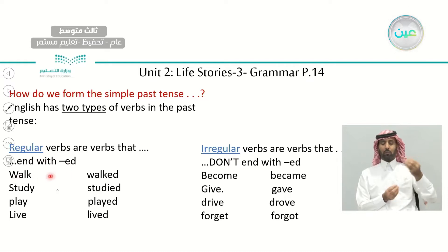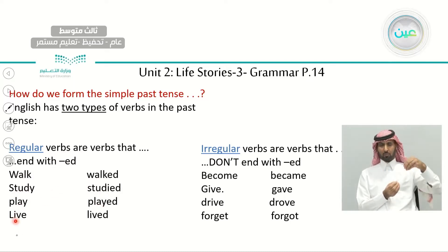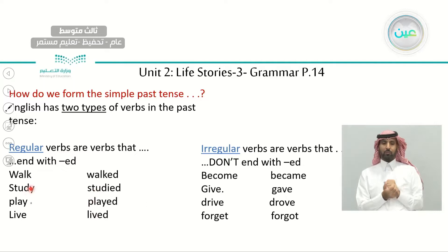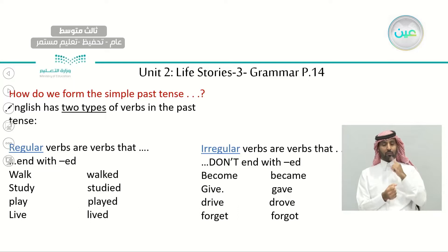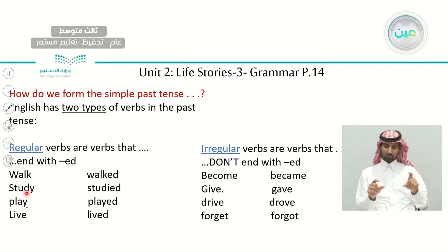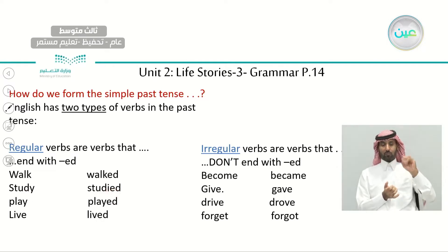For regular verbs, we just add '-ed.' Like: walk → walked, study → studied, play → played, live → lived. Notice: we have two verbs ending in 'y.' For 'study,' we remove the 'y' and add '-ied' because before the 'y' we have 'd,' which is a consonant. But for 'play,' before the 'y' we have 'a,' which is a vowel — so if we have a vowel before the 'y,' we don't remove it; we just add '-ed.'